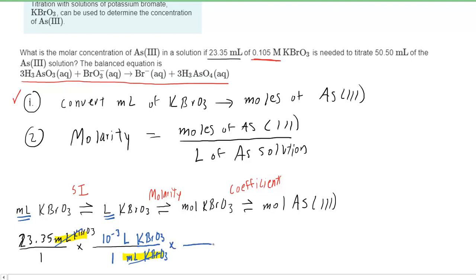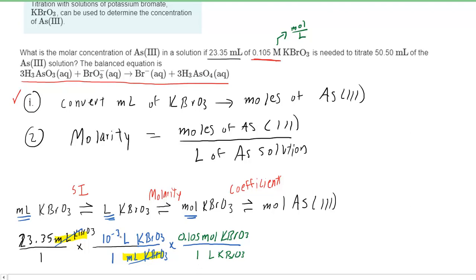We'll then convert the liters into moles using the molarity. The molarity is given as 0.105 molar — recall that molar is equivalent to moles per liter. Since we have liters of KBrO3 in the numerator, we place liters of that substance in the denominator so they cancel. In the numerator, since we're converting into moles, we place that unit. The molarity tells us that 0.105 moles exist in one liter, so we put 0.105 moles in the numerator and one liter in the denominator. We then cancel out the liters.